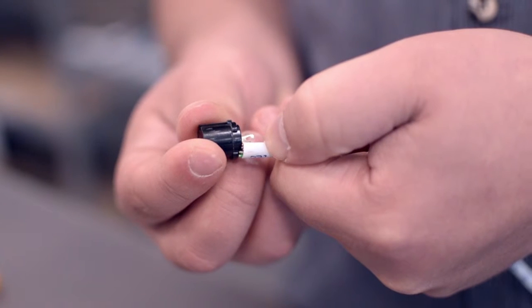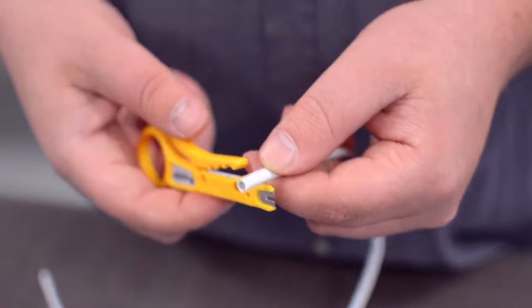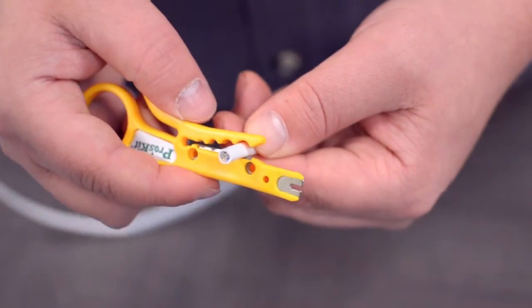Measure how far you will need to strip back the jacket by holding the cable up against the base of the connector. Then, strip the cable jacket using the wire strippers.